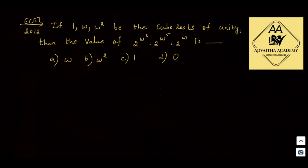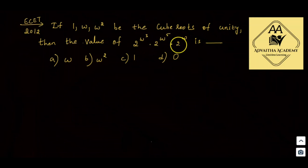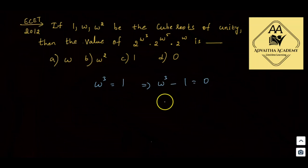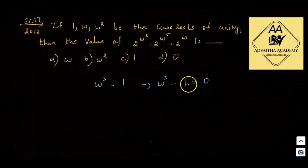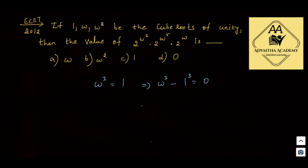Next problem: ESET 2012. If 1, omega, and omega squared are cube roots of unity, then the value of 2^(omega cubed) times 2^(omega to the power 5) times 2^(omega) is? For cube roots of unity, omega cubed equals 1, so omega cubed minus 1 equals 0.